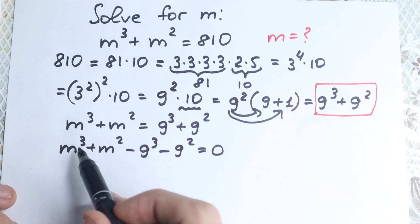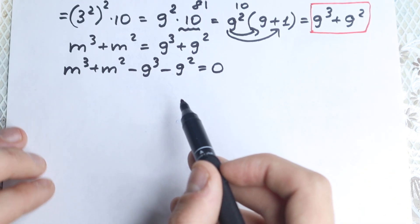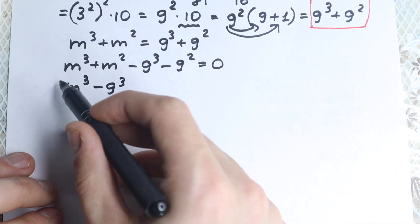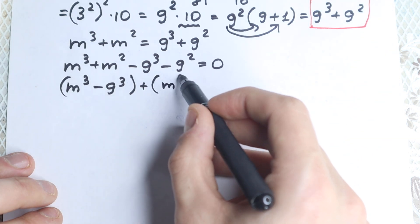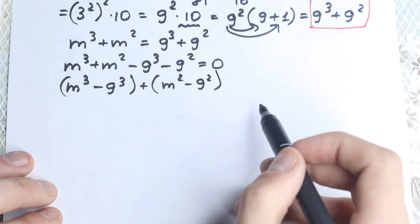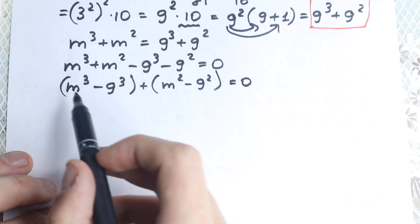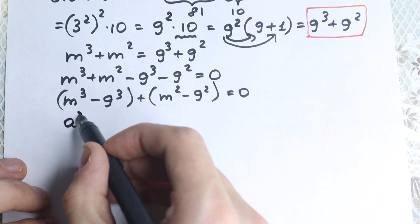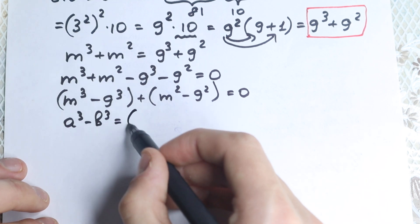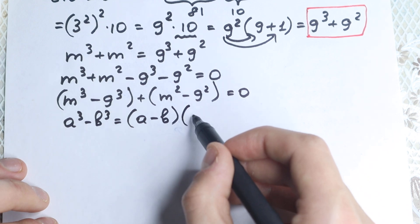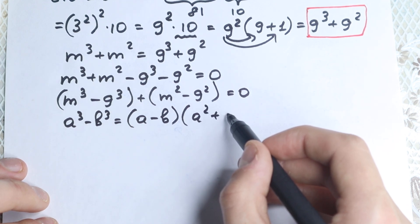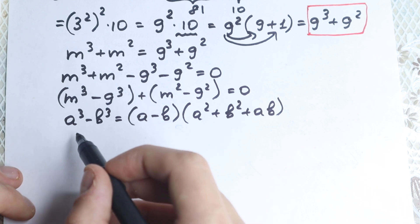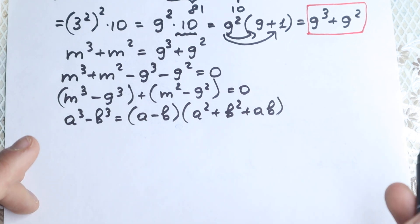Right now we have a third power and a second power. Let's group these elements: (m cubed minus 9 cubed) plus (m squared minus 9 squared) equals zero. For the difference of cubes, the formula is: a cubed minus b cubed equals (a minus b)(a squared plus b squared plus ab). And for the difference of squares, it's (a minus b)(a plus b).